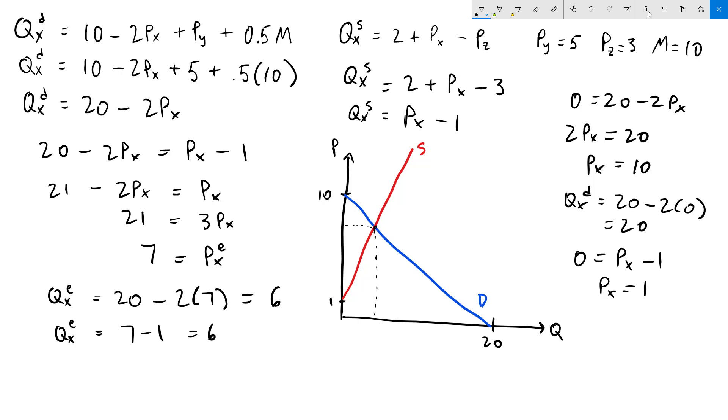And then I'll mark that off on the graph as well. We know that our equilibrium price is 7, and we know that our equilibrium quantity is 6. Next, I'll draw in areas for our consumer and producer surplus.